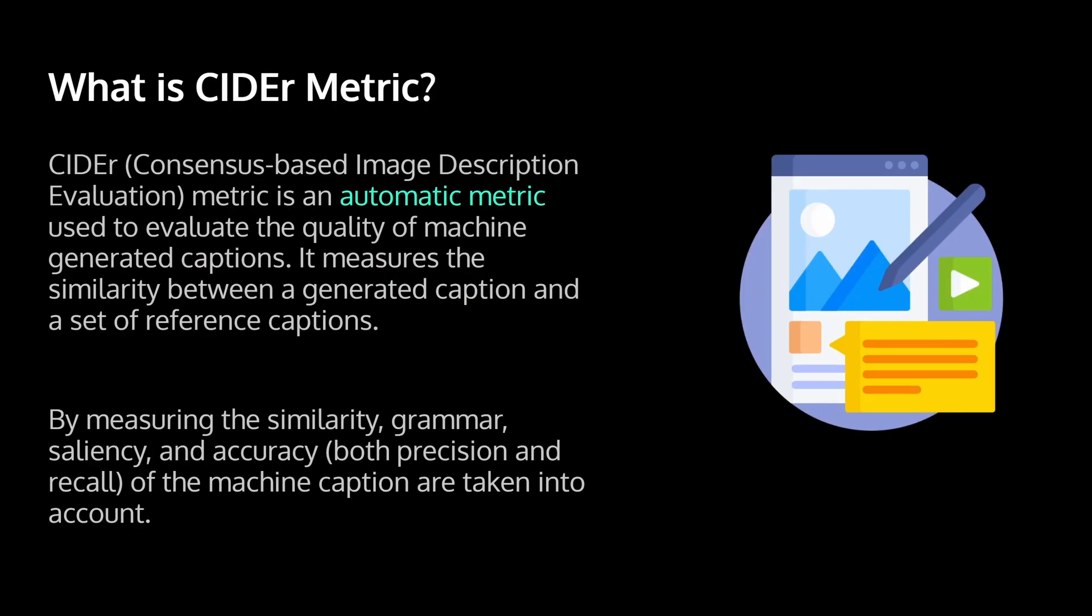So what is the CIDEr metric? The CIDEr metric stands for consensus-based image description evaluation metric, and it is an automatic metric used to evaluate the quality of machine-generated captions. It measures the similarity between a generated caption and a set of reference captions. So it is basically one of the best metrics for image captioning.